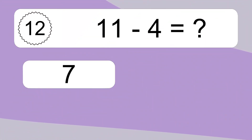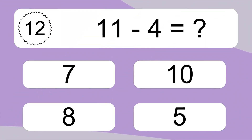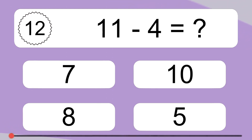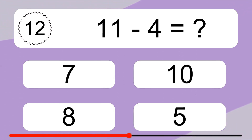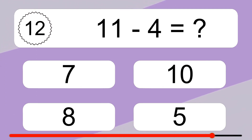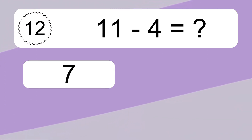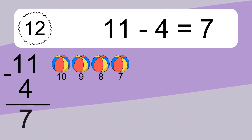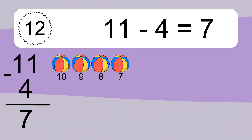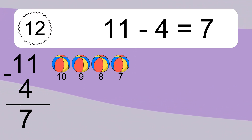11 minus 4 equals what? 11 minus 4 equals 7. Let's count it: 10, 9, 8, 7.